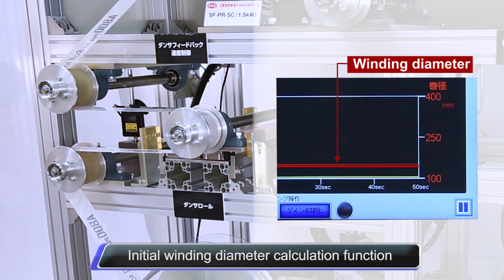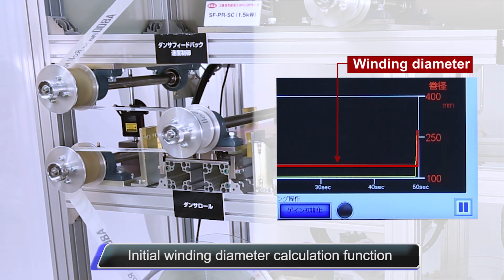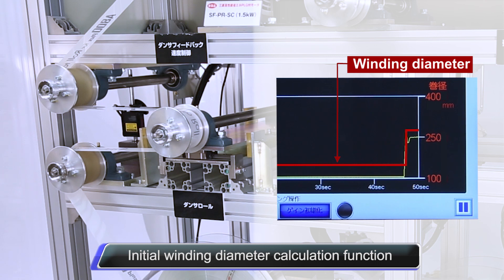The initial winding diameter calculation function calculates the current winding diameter based on the movement of the dancer roll from its lowest position to the target position.